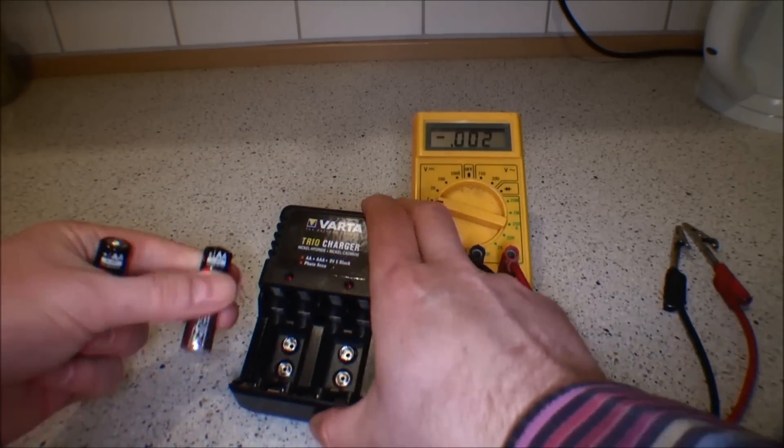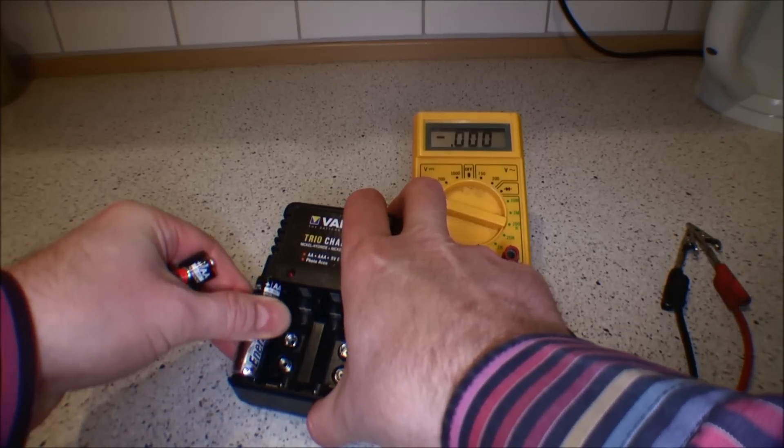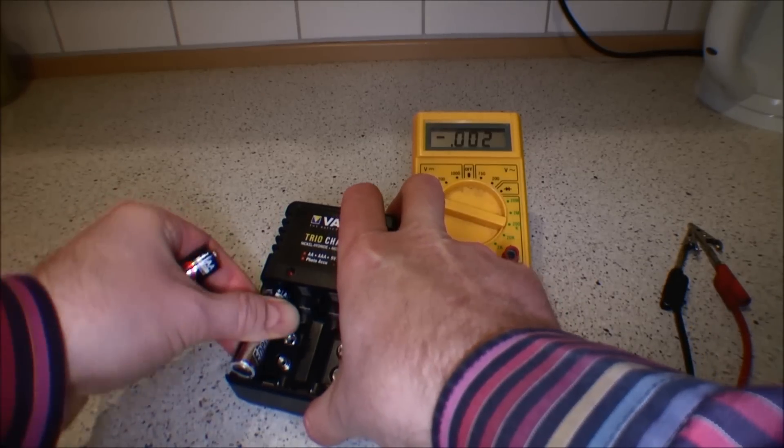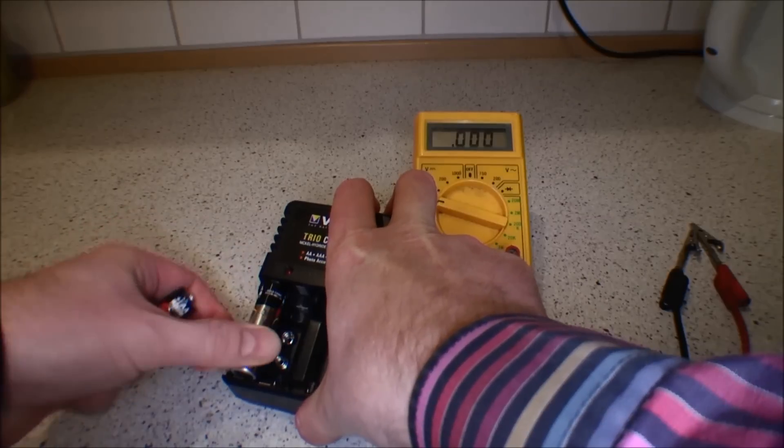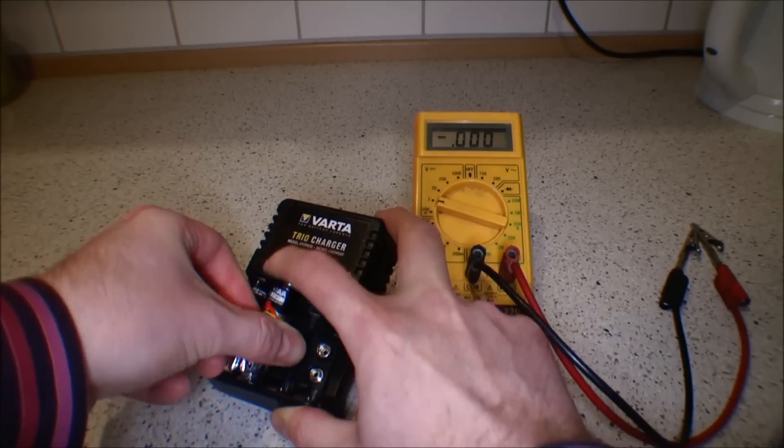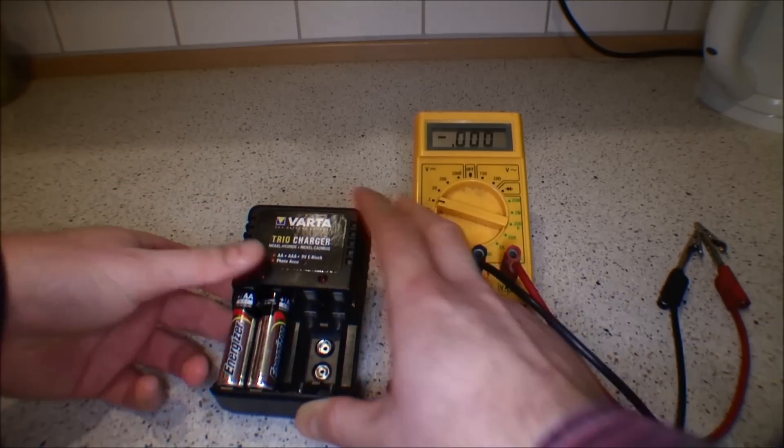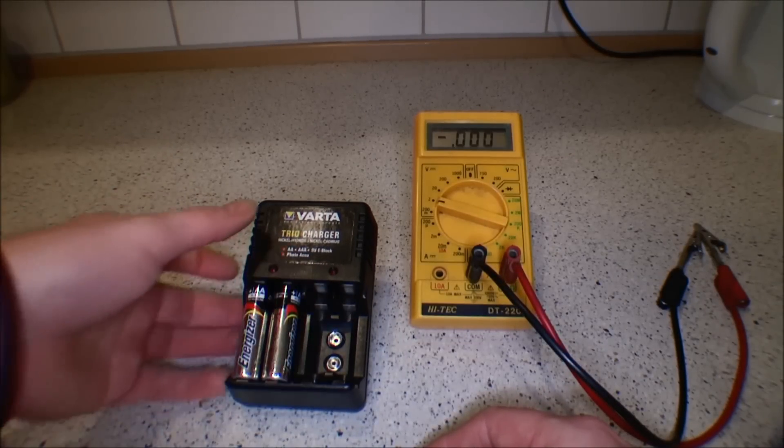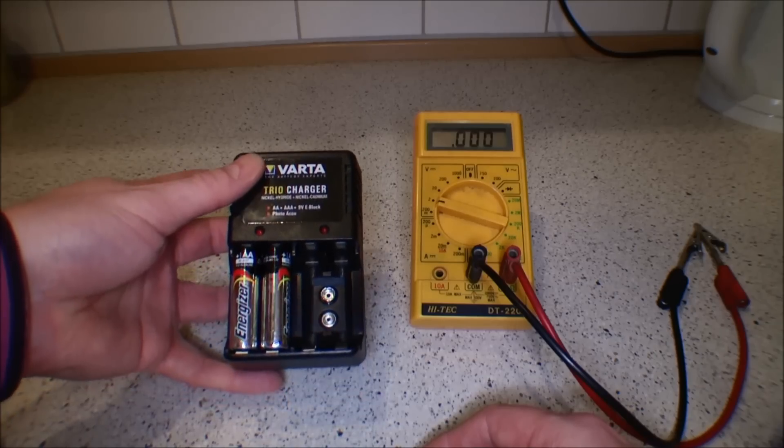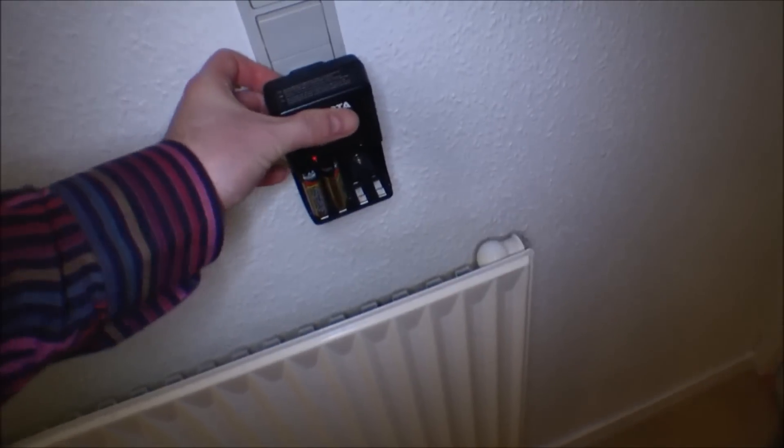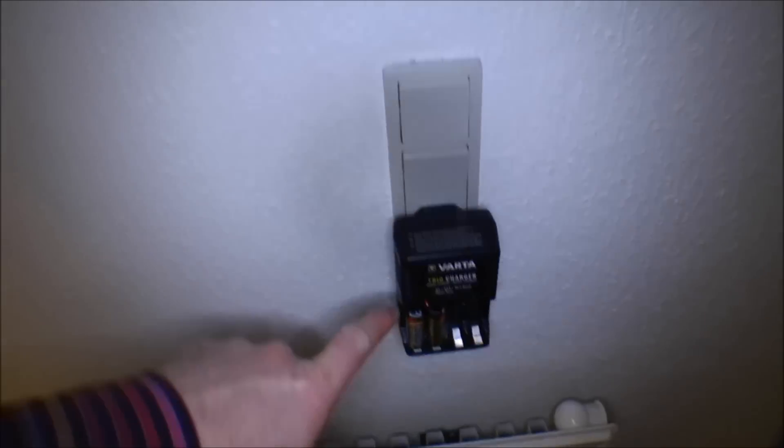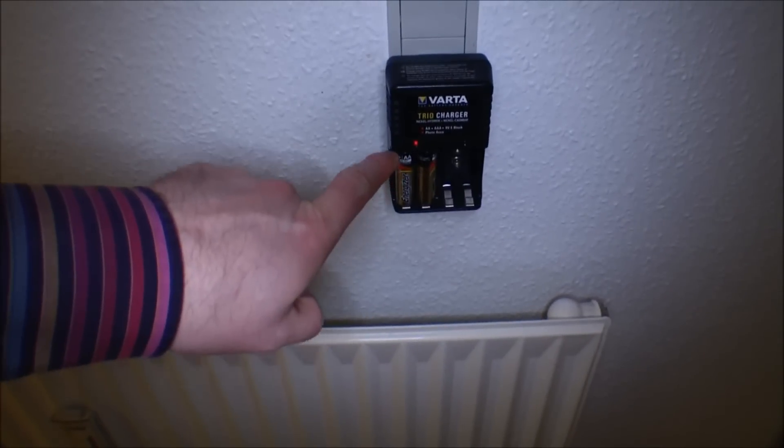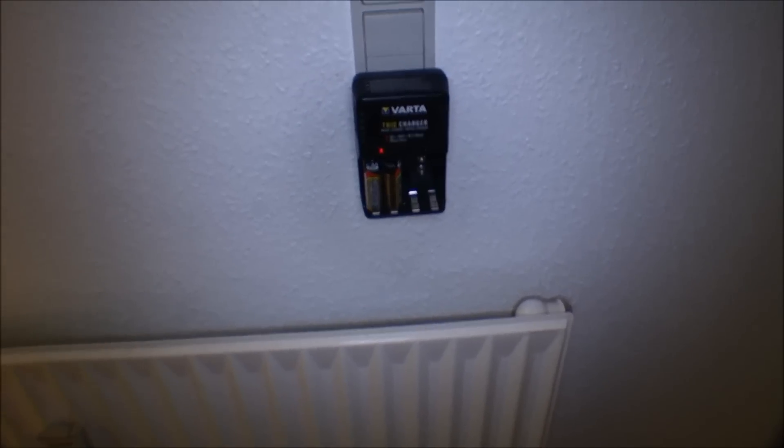This charger works two by two. There we are. In this charger, you can charge two batteries there and two batteries there. You cannot charge one battery, so it's a good thing that I have two batteries to charge. Let's plug them over here at the light socket, and the light comes on right there—there's a red light. Cool.